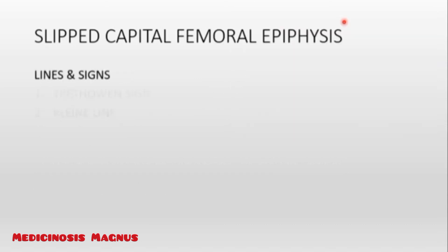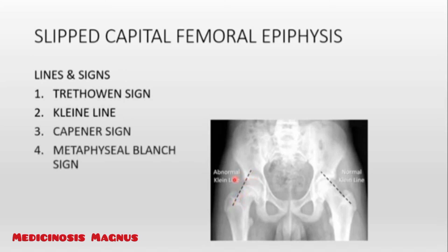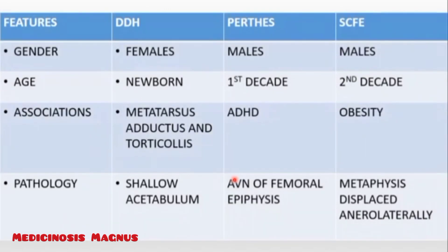In SCFE, the patient cannot do abduction, internal rotation, or flexion of the hip. Klein's line: from the greater trochanter of the femur, a line is drawn, and in a normal hip some part of the femoral head is visible above the line. In an abnormal hip, no epiphysis is seen above the line — this is Trethowan's sign. Other signs include Capener sign and metaphyseal blanch sign. Investigation of choice is MRI and treatment is fixation.